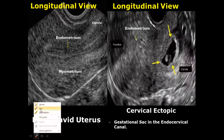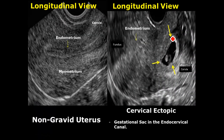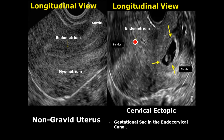Cervical ectopic is a rare form of ectopic pregnancy in which there is a gestational sac in the endocervical canal. Normally the pregnancy should be located in the endometrial canal implanted inside the endometrium, but in this case it is in the cervical region.